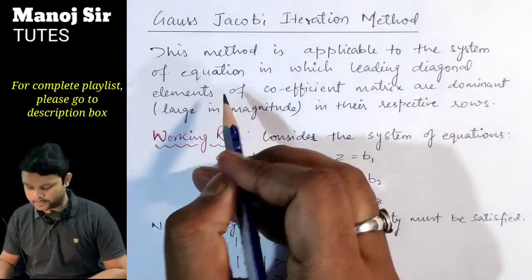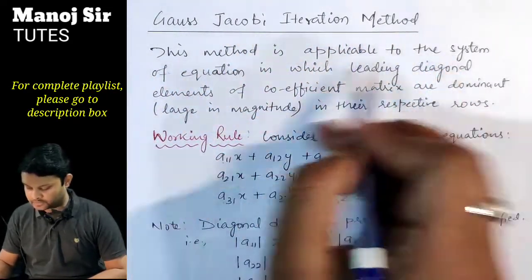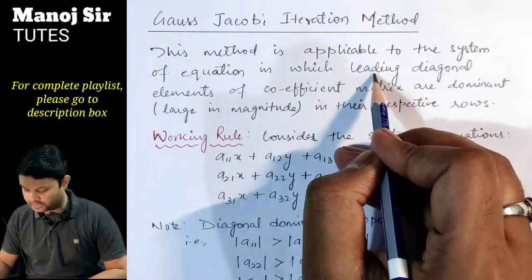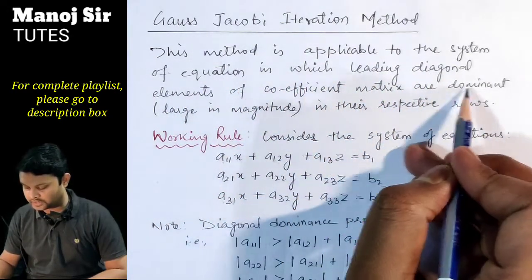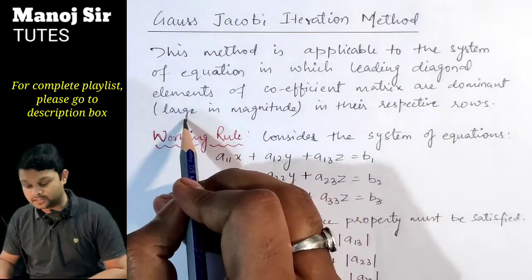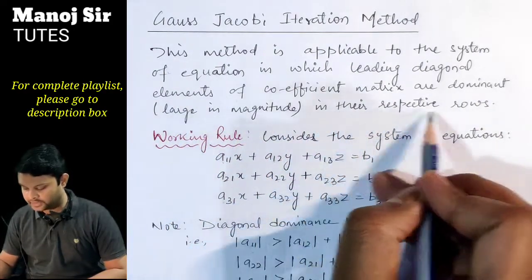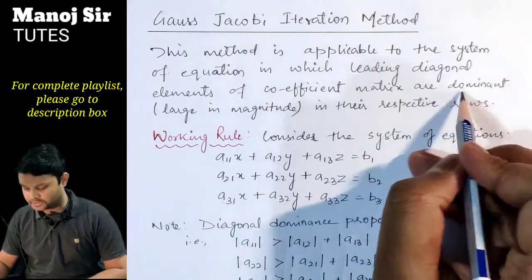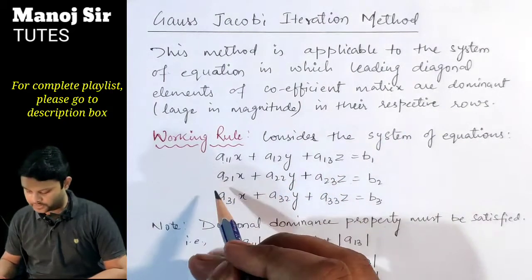This method is applicable to a system of equations in which the leading diagonal elements of the coefficient matrix are dominant — that is, large in magnitude in their respective rows. We will discuss this further in a moment.